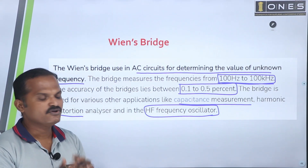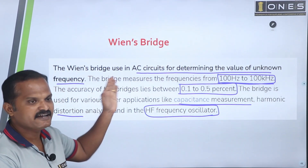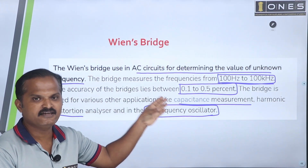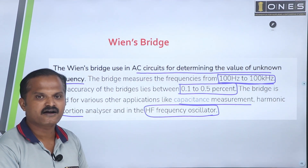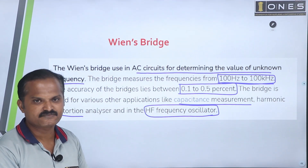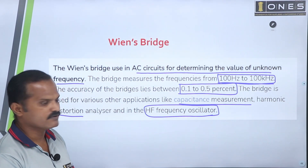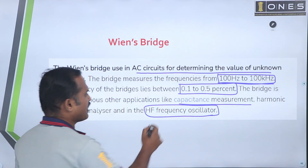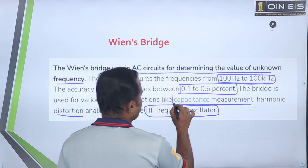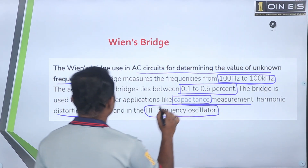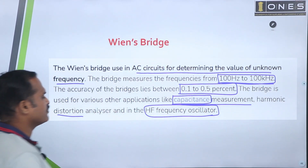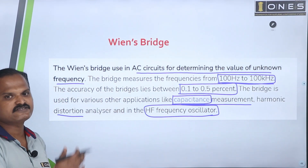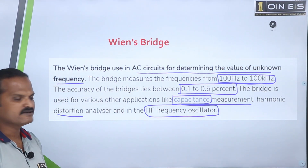Wein's bridge is especially dedicated for frequency measurement in the range of 100 hertz to 100 kilohertz. This is mainly used for applications like capacitance measurement, harmonic distortion analysis, and in high-frequency oscillator circuits.